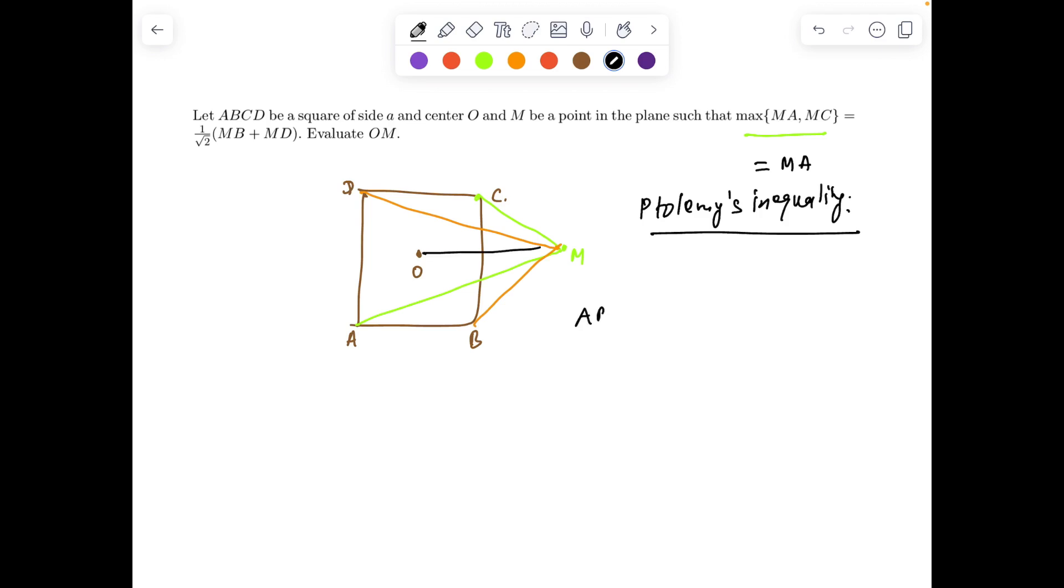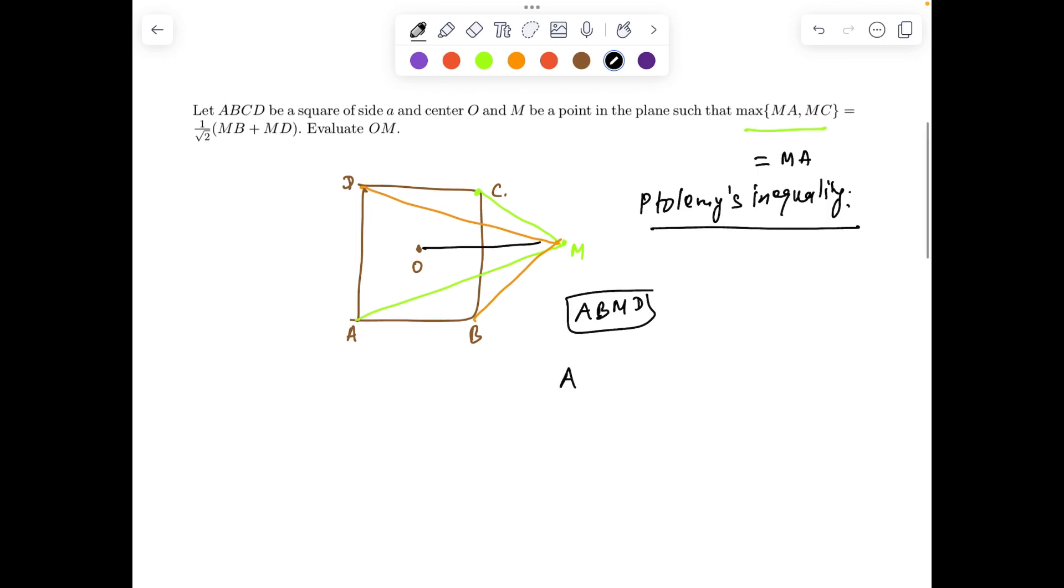Using Ptolemy's inequality in the quadrilateral ABMD, Ptolemy's theorem tells us AD times MB plus AB times MD is greater than or equal to the product of diagonals BD times MA. For cyclic quadrilaterals, the equality will hold.